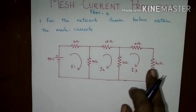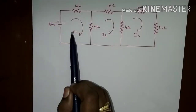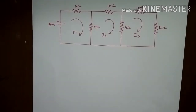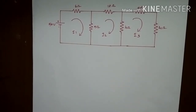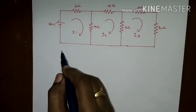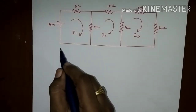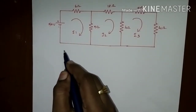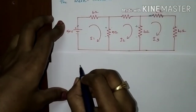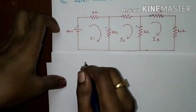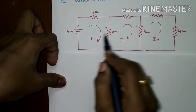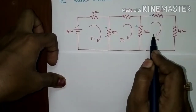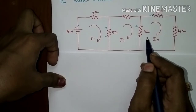For the network shown below, obtain the mesh currents. This is a network of 3 meshes, so the matrix can be formed as a 3×3 matrix using KVL equations. First, I will represent the resistance values in the symmetric matrix. Since it has 3 meshes, it has a 3×3 matrix with 9 elements.